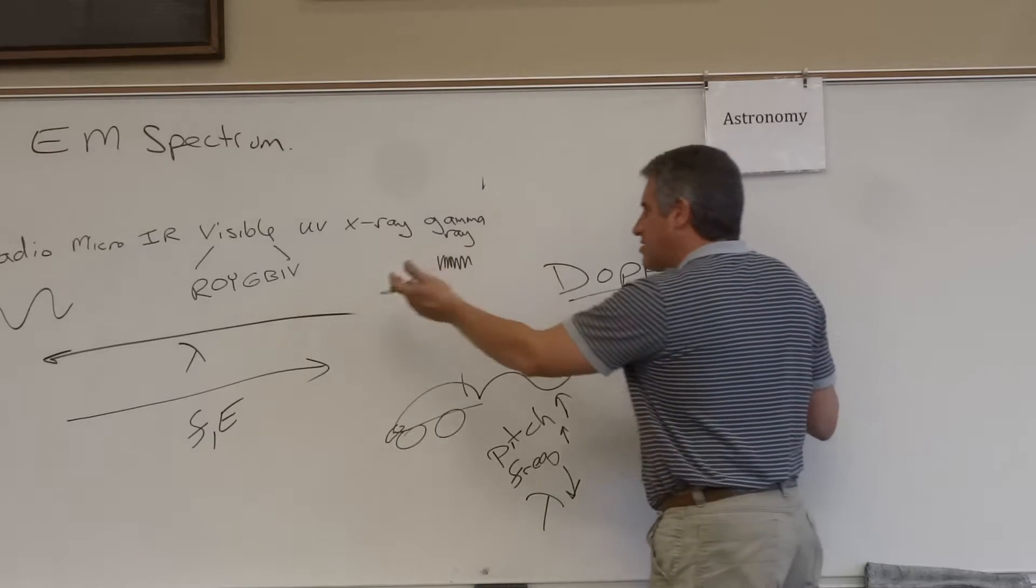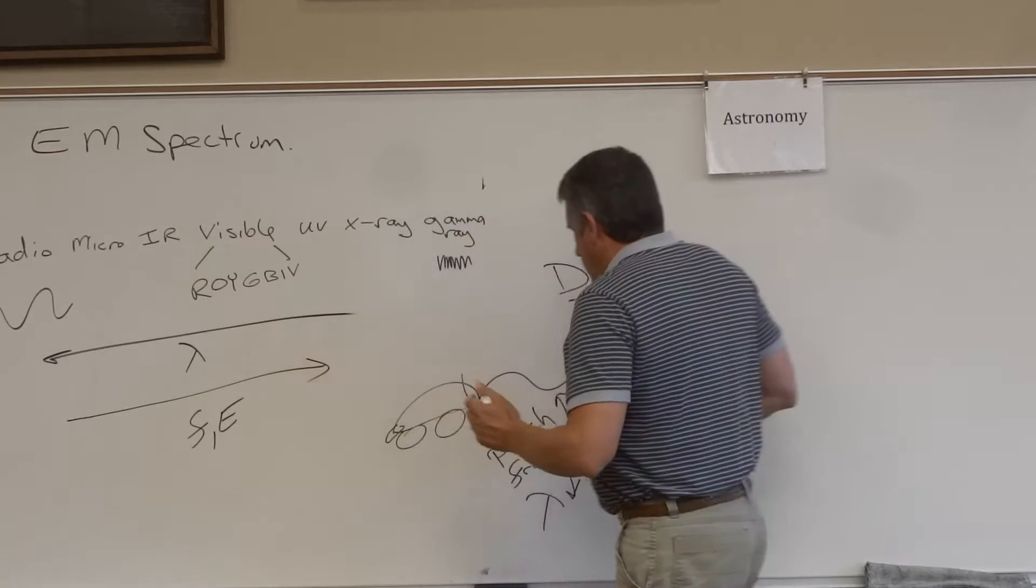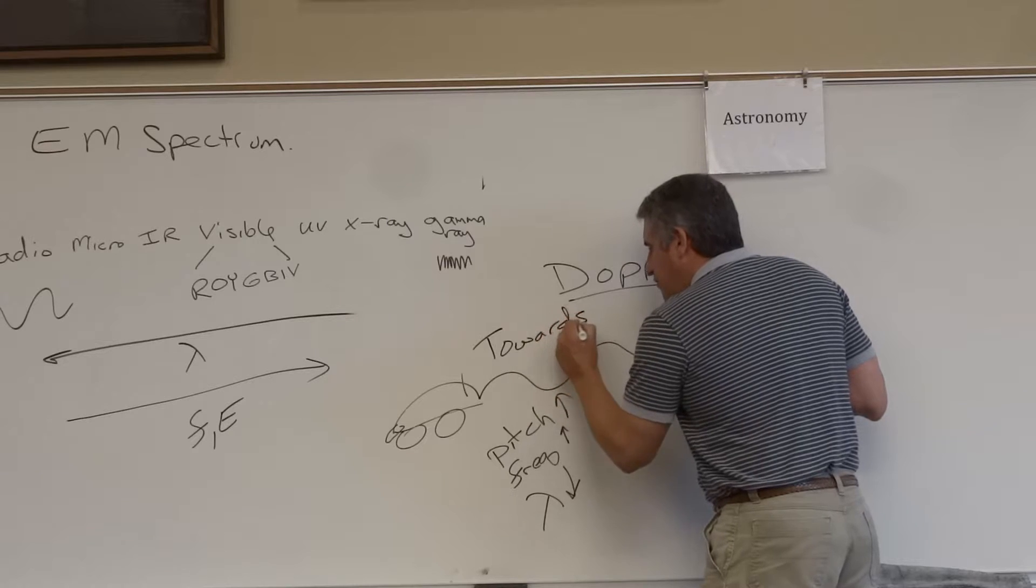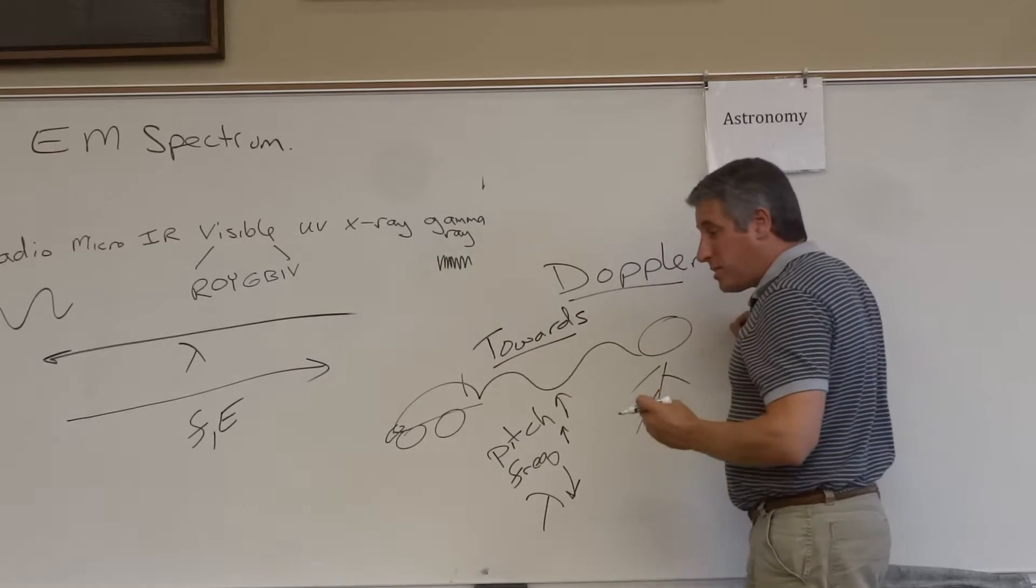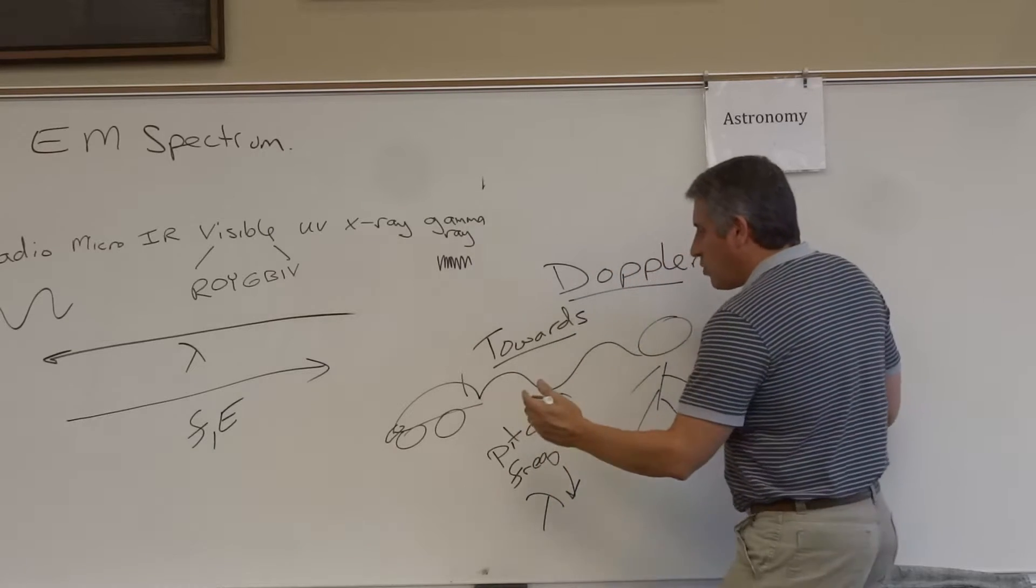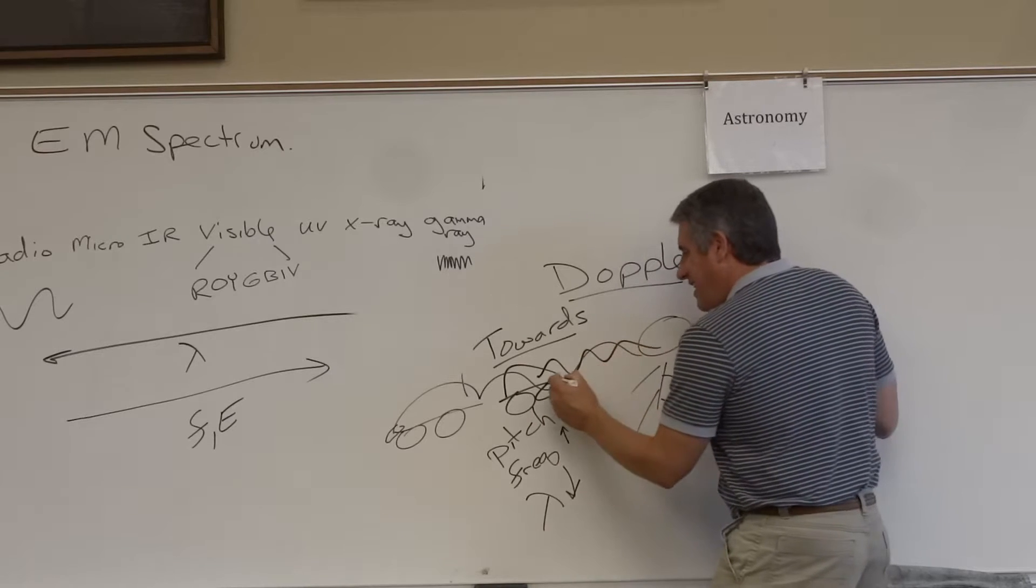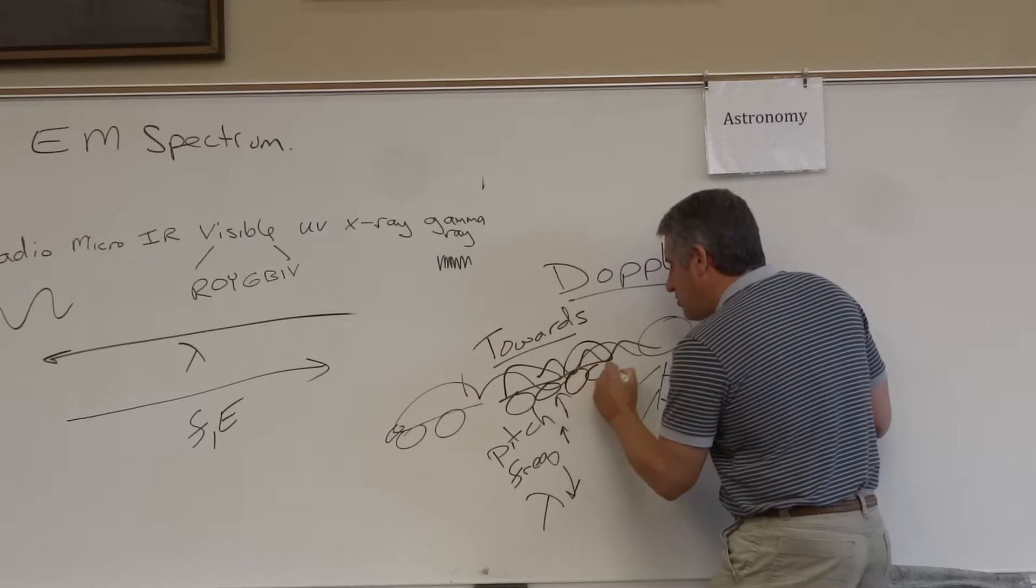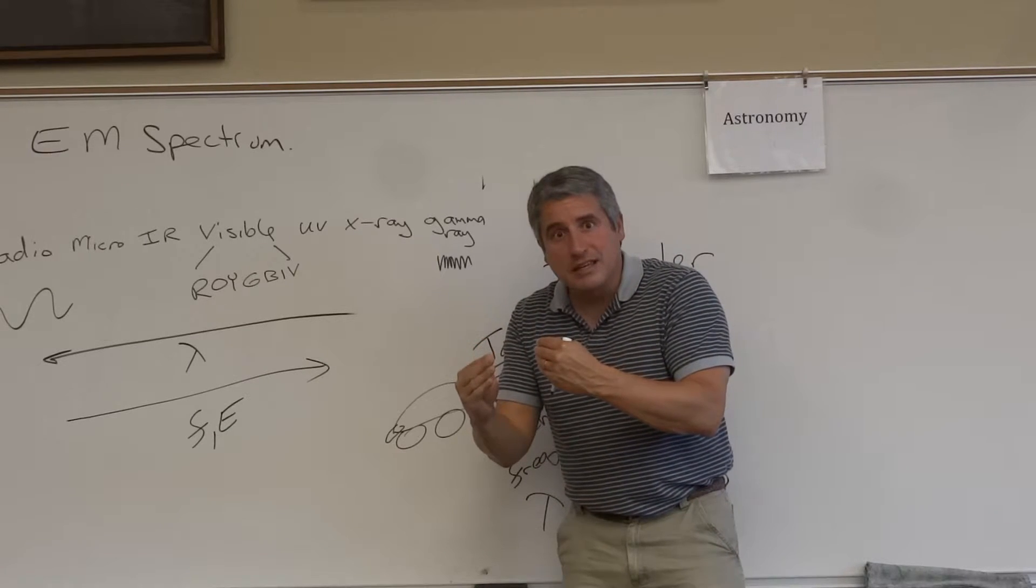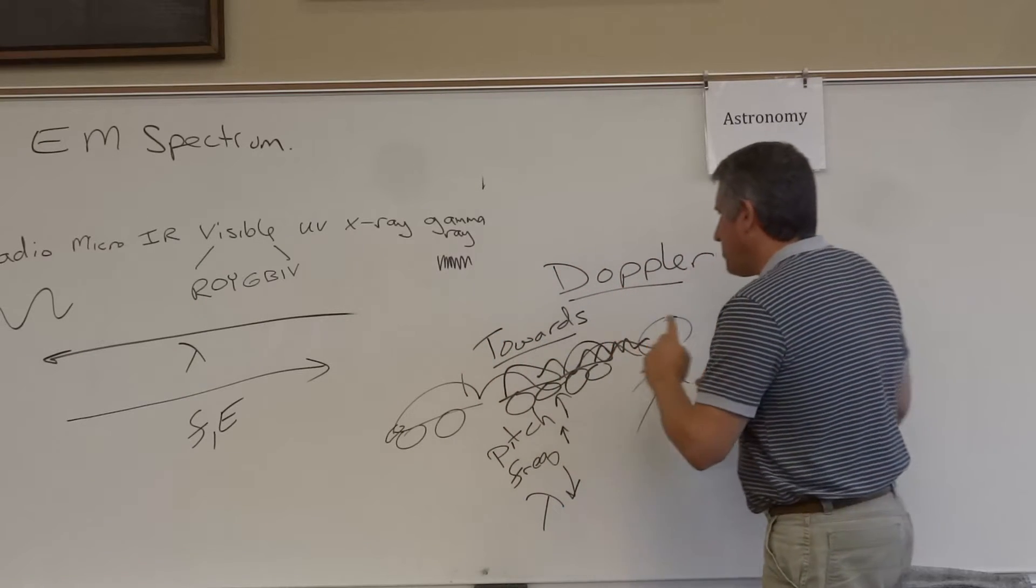Now you're saying, wait a minute, that's to describe light. This is sound. Hey, they both travel as a wave. So as an object moves towards us, we hear it in the form of the pitch, the wavelength actually decreases. Why? Because the waves are literally getting compressed as the car moves towards us. The waves are getting compressed, physically compressed. That's why we hear the difference in pitch, the Doppler effect.